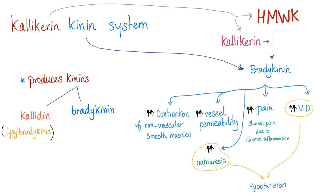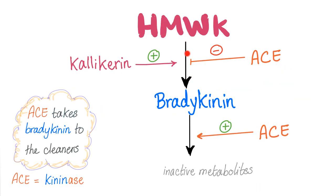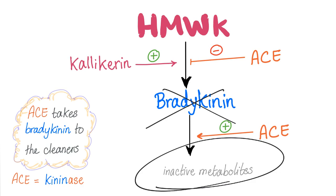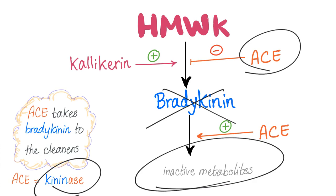If you are in the plasma, you have high molecular weight kininogen and plasma kallikrein producing bradykinin. If you are in the tissue, you have low molecular weight kininogen and tissue kallikrein producing kallidin. If kallikrein stimulates this step, ACE is going to inhibit it — not only that, it degrades bradykinin into inactive metabolites. That's why we call ACE a kininase.